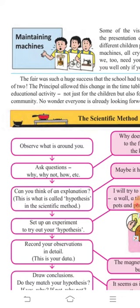We have so many machines at home — a cycle, sewing machine, motorcycle — and we need to maintain them, meaning take care of them, so we can use them for a longer time. If you do not maintain them they get spoiled faster. Here, children were mimicking machines, saying they require maintenance, otherwise they will get spoiled and you won't be able to do your work. They were explaining the importance of maintaining machines.